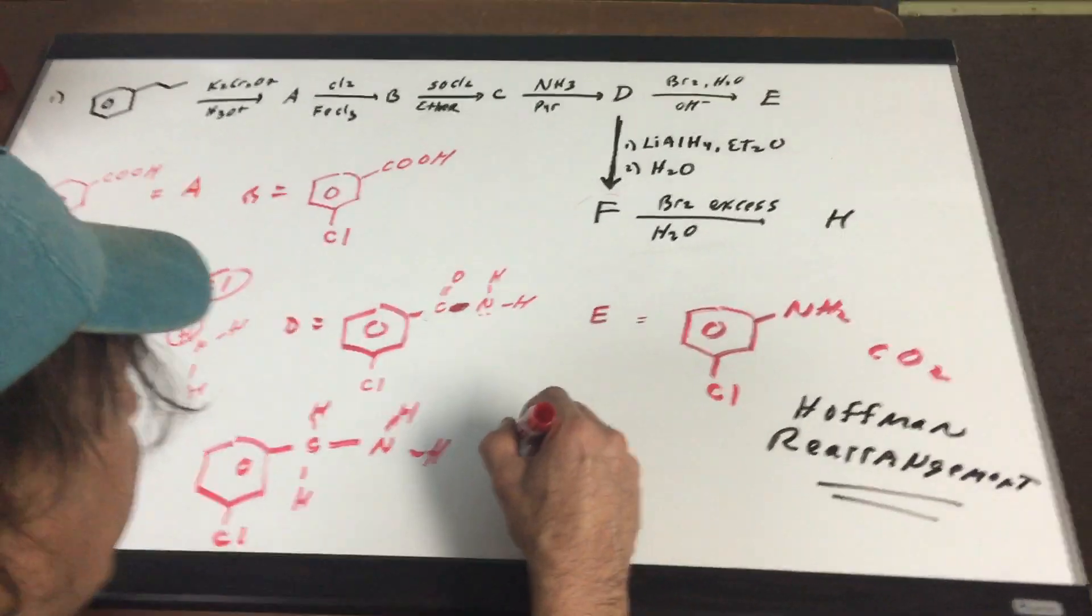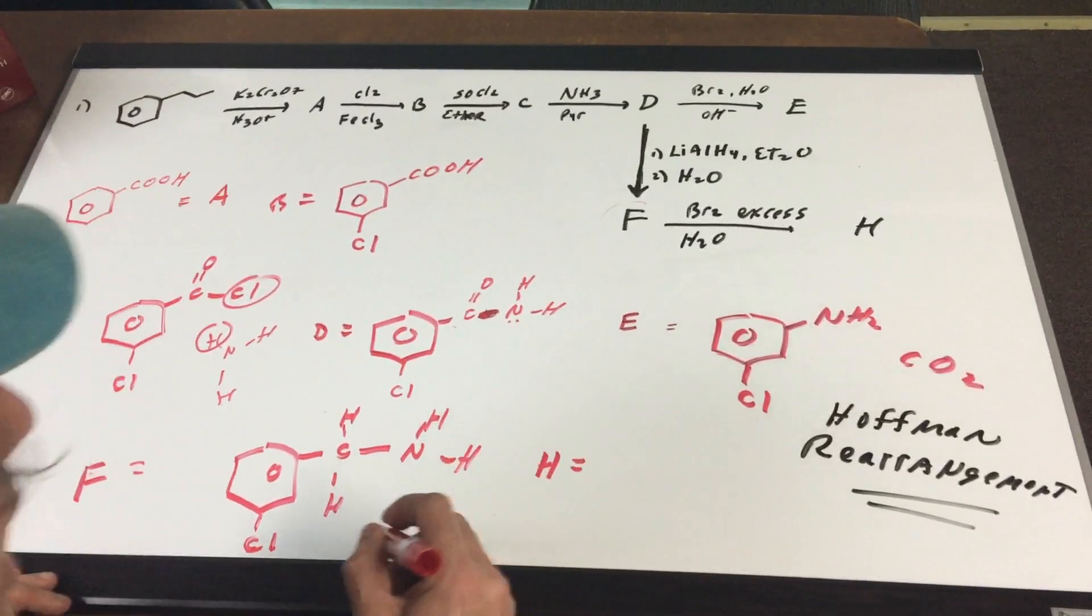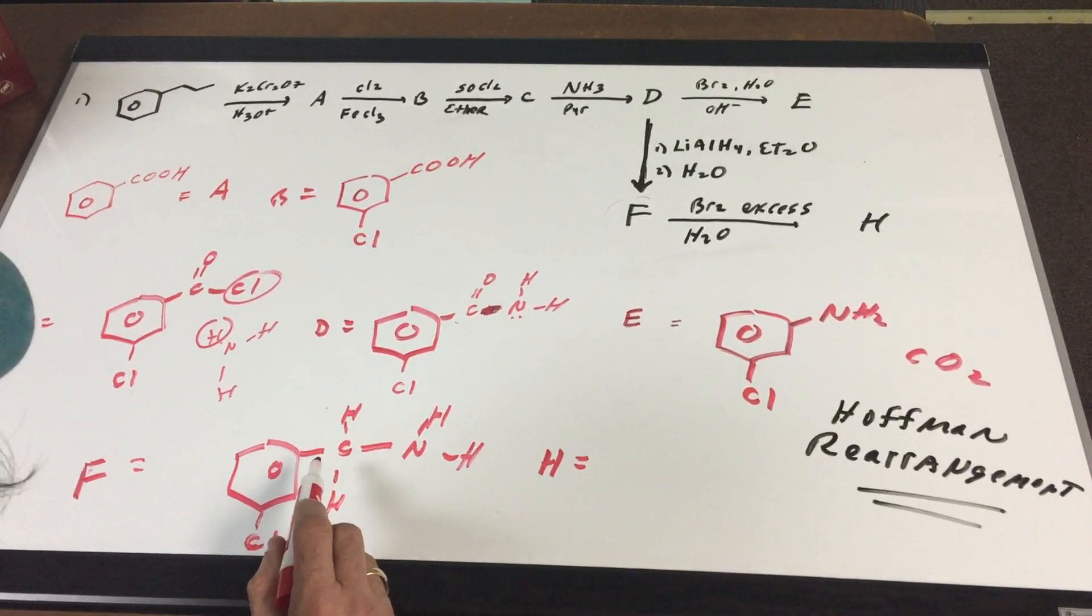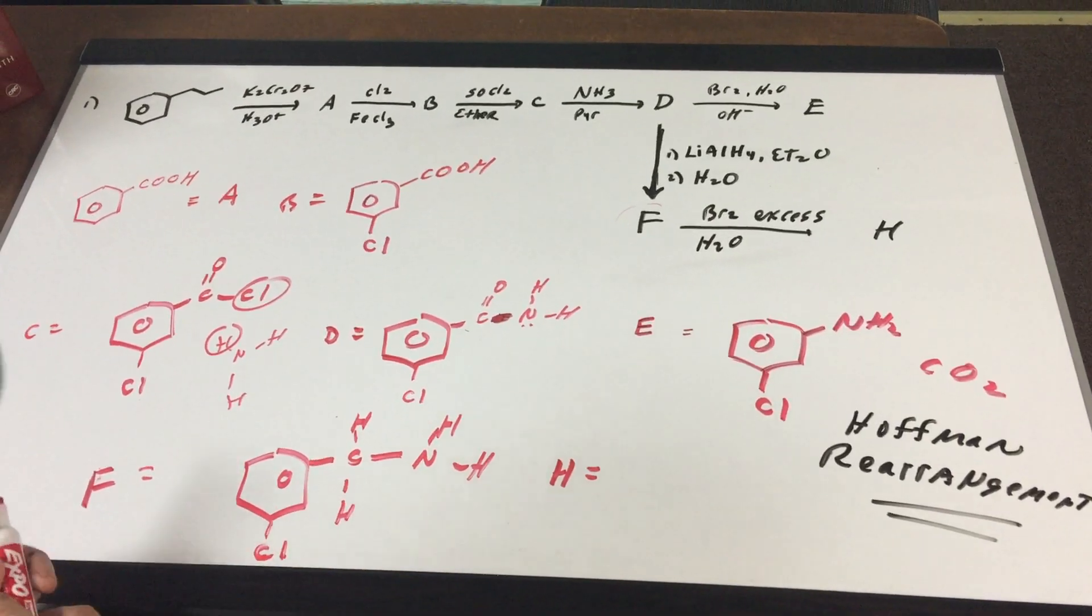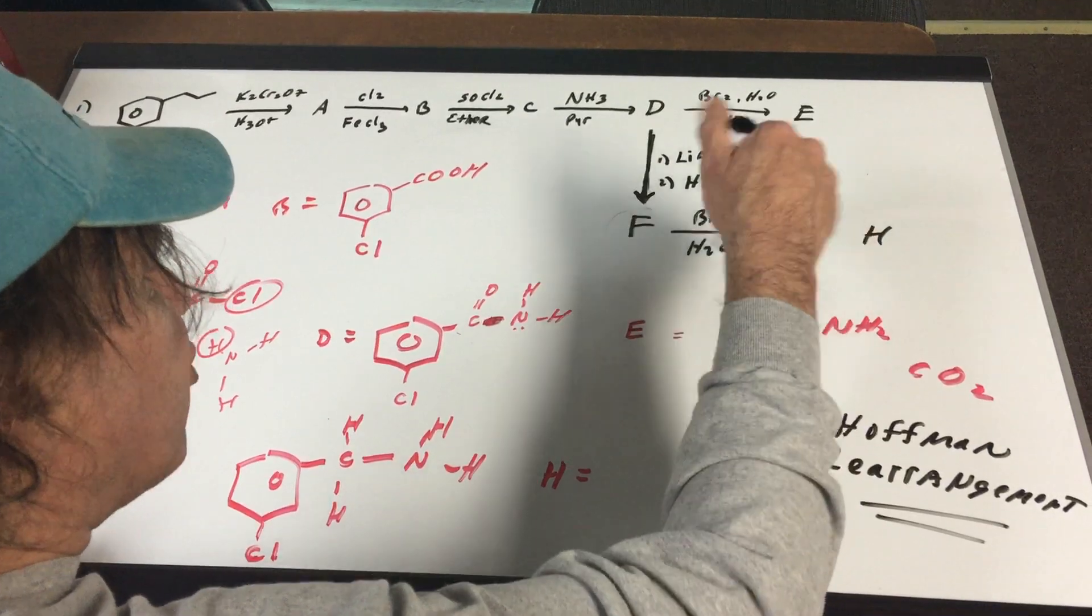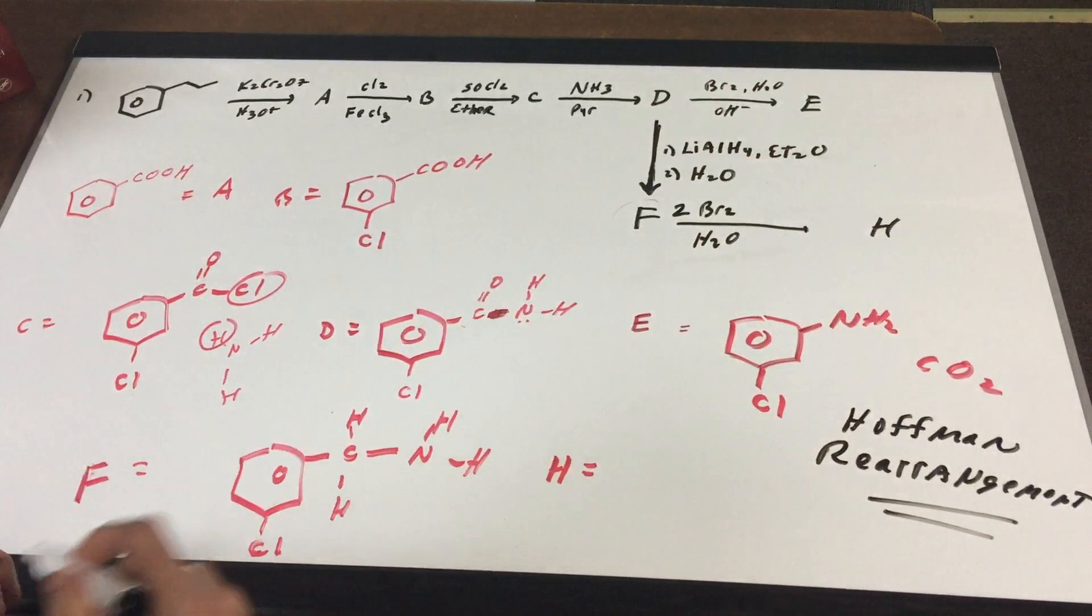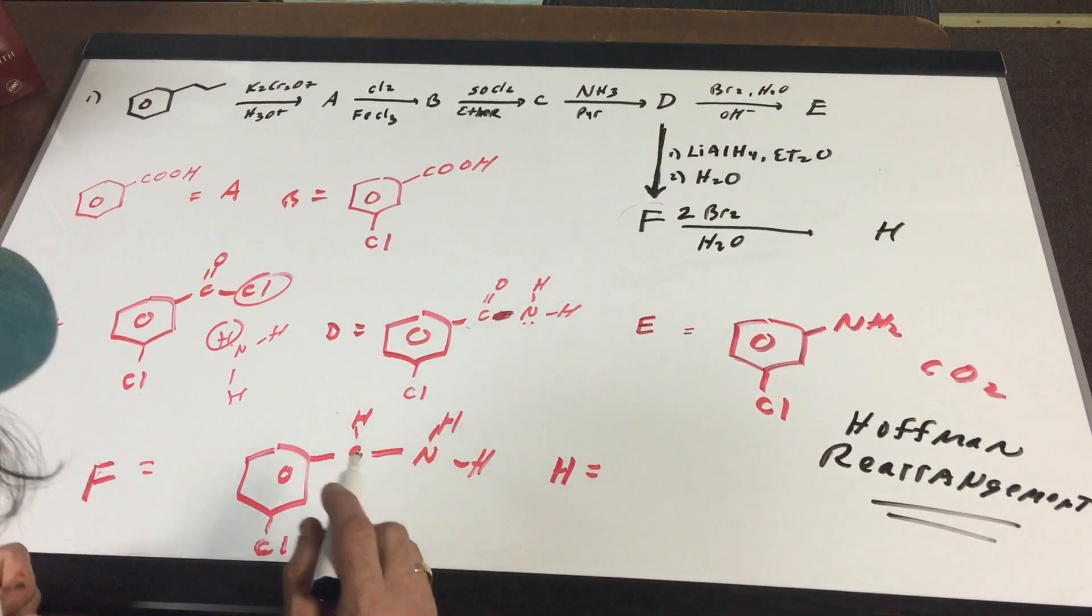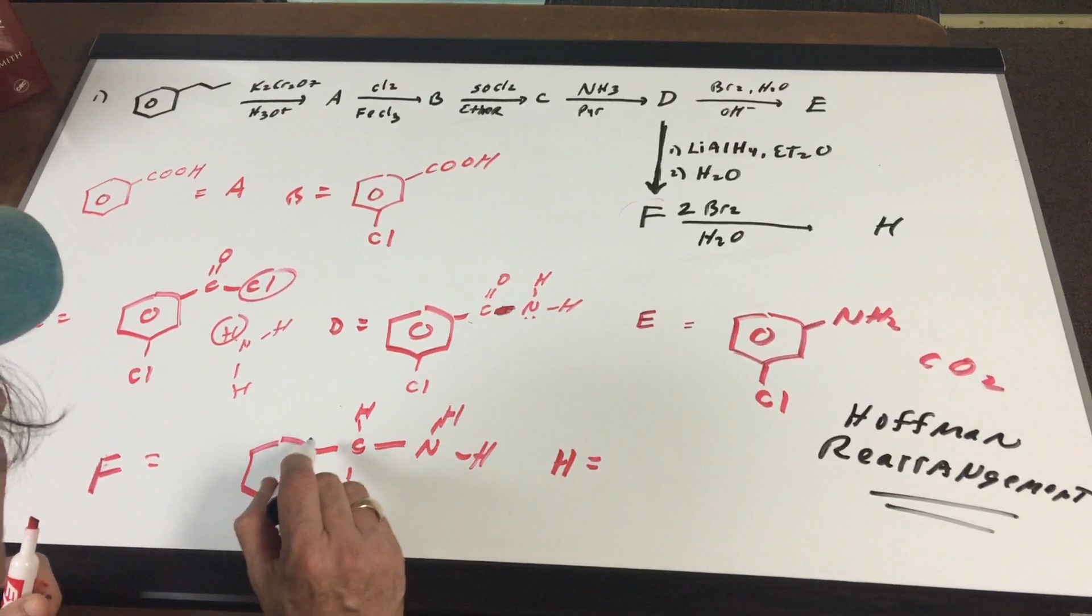And finally, the last one is letter H. We're going to hit this with excess bromine. Excess bromine, why don't we just make it two bromines? And if there's only two bromines, there's going to be two spots, main spots.